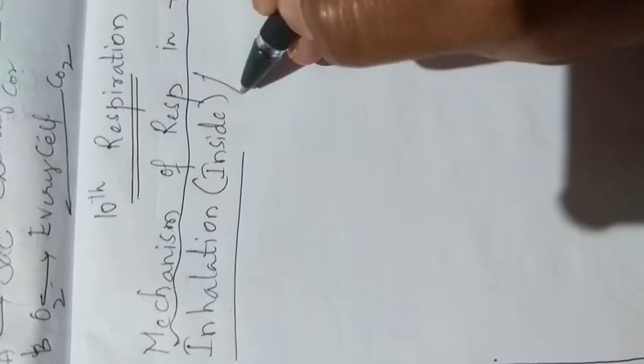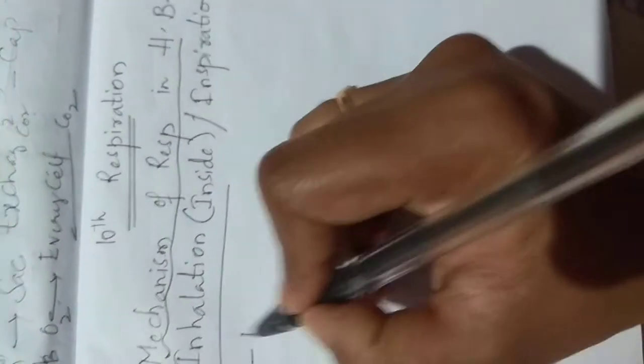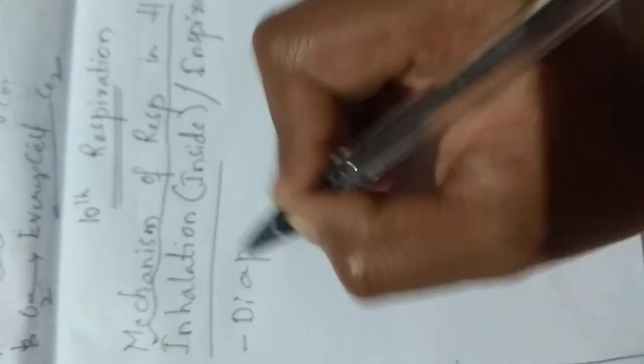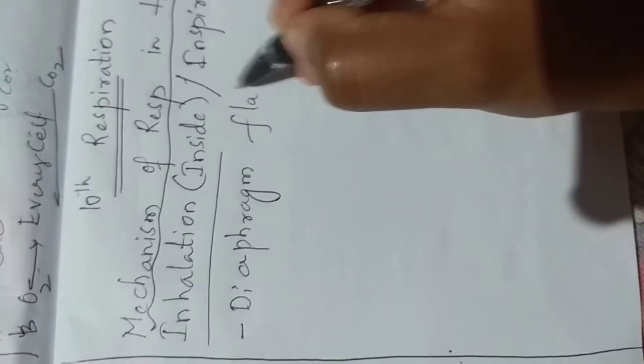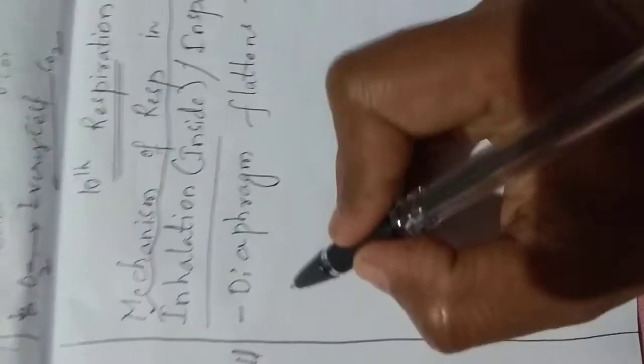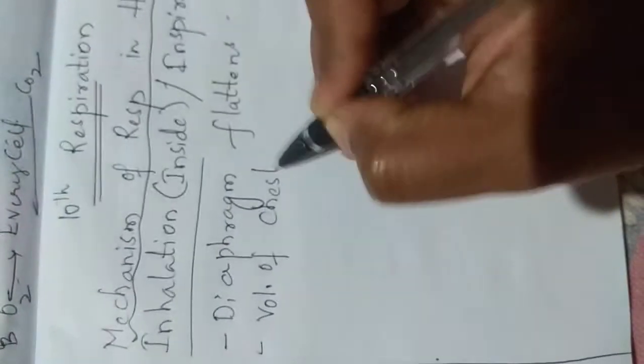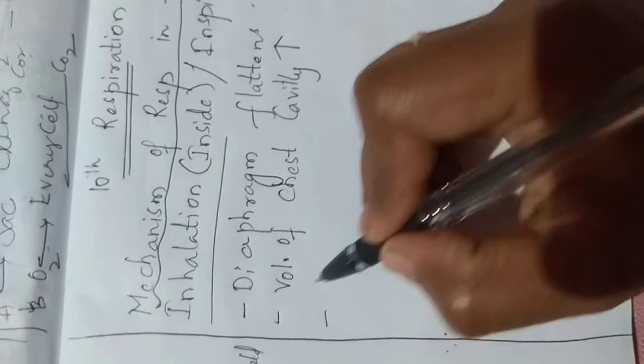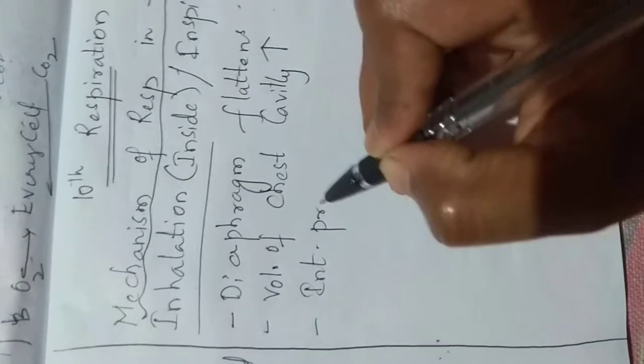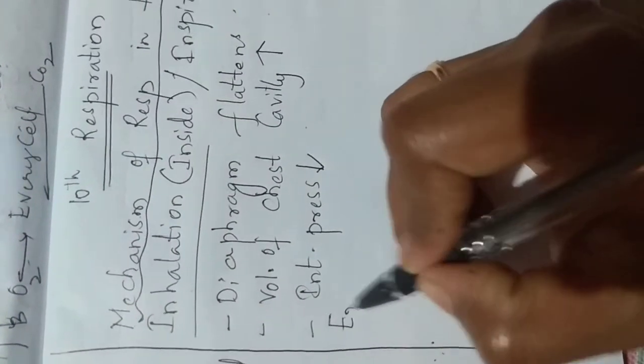Inhalation is also called as inspiration. So what changes are? First, diaphragm flattens. Diaphragm is a muscle, it flattens and volume of chest cavity increases. And internal pressure decreases.